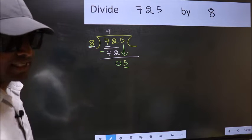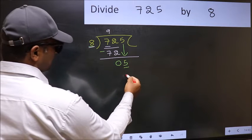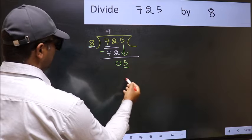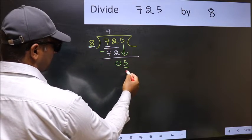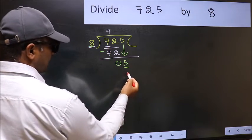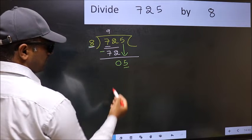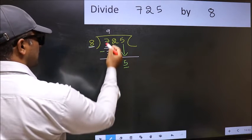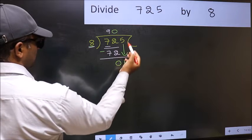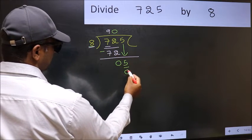Instead, what you should think of doing is which number should we take here. If I take 1, we will get 8. But 8 is larger than 5. So what we should do is we should take 0. So 8 into 0, 0.